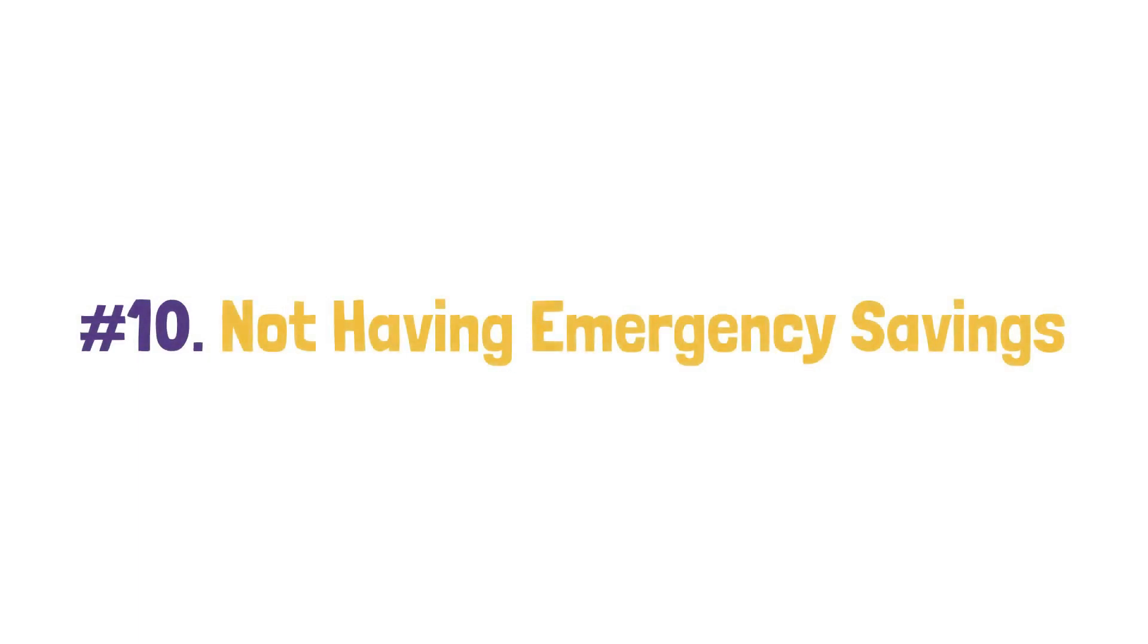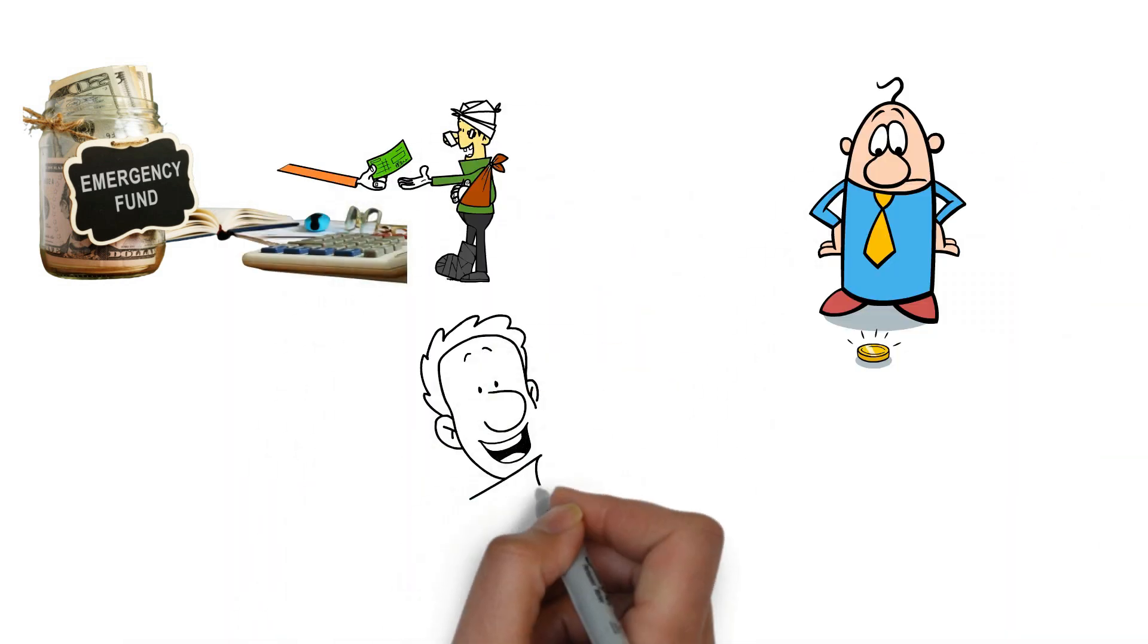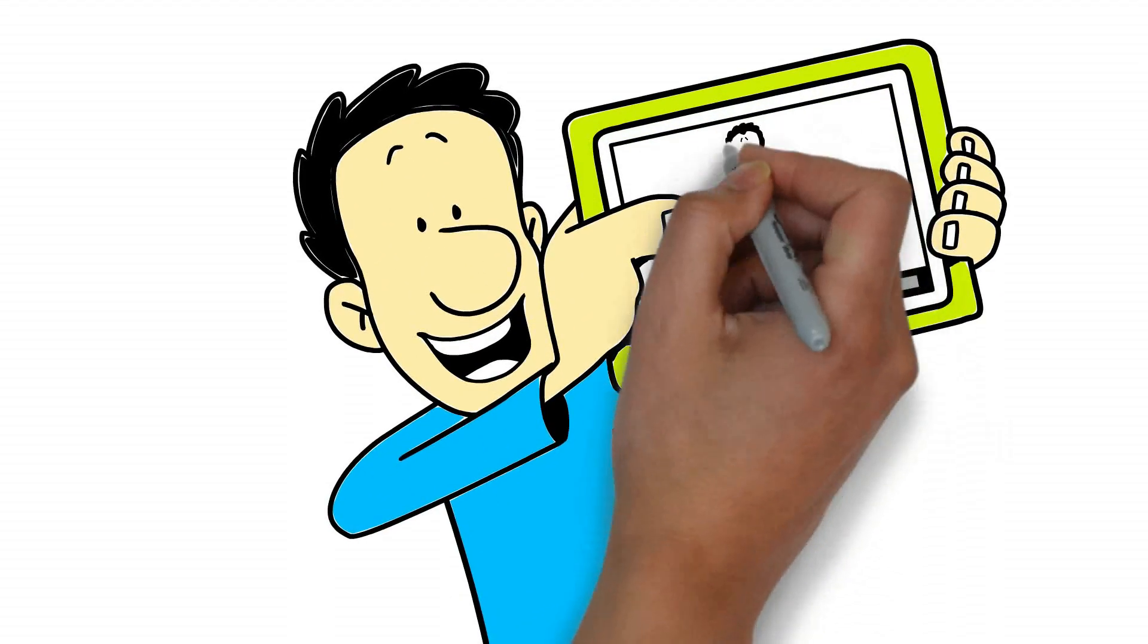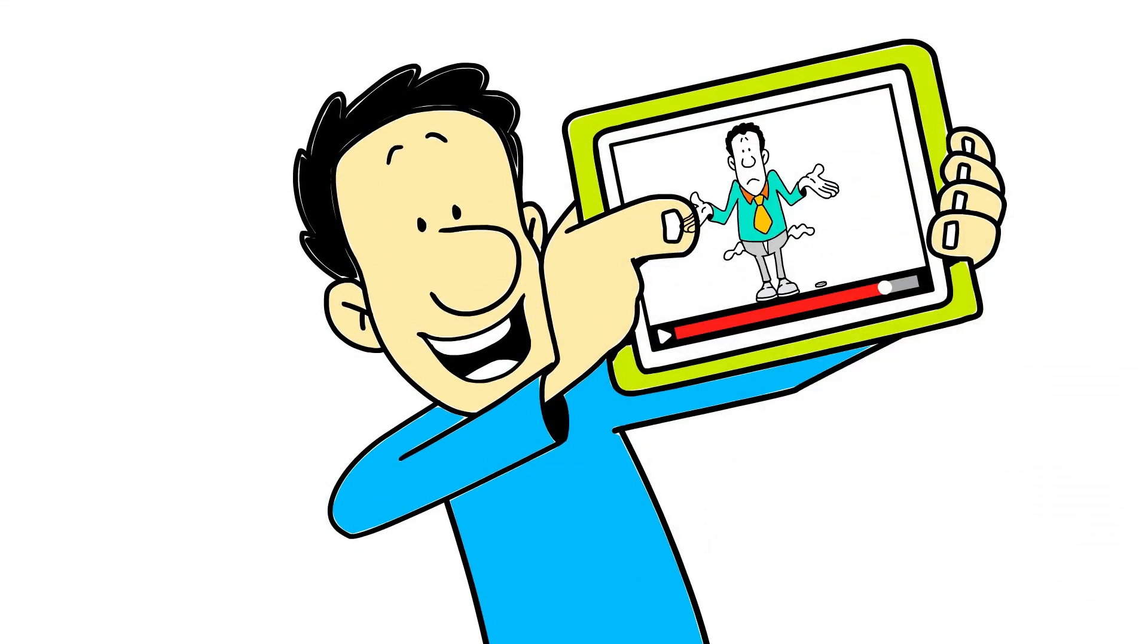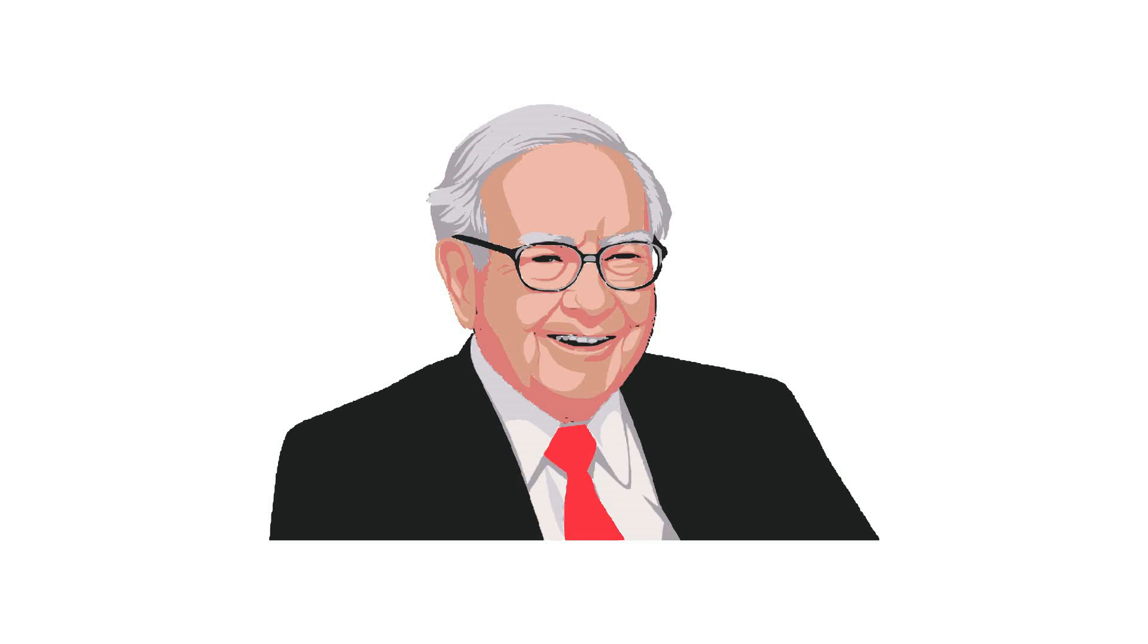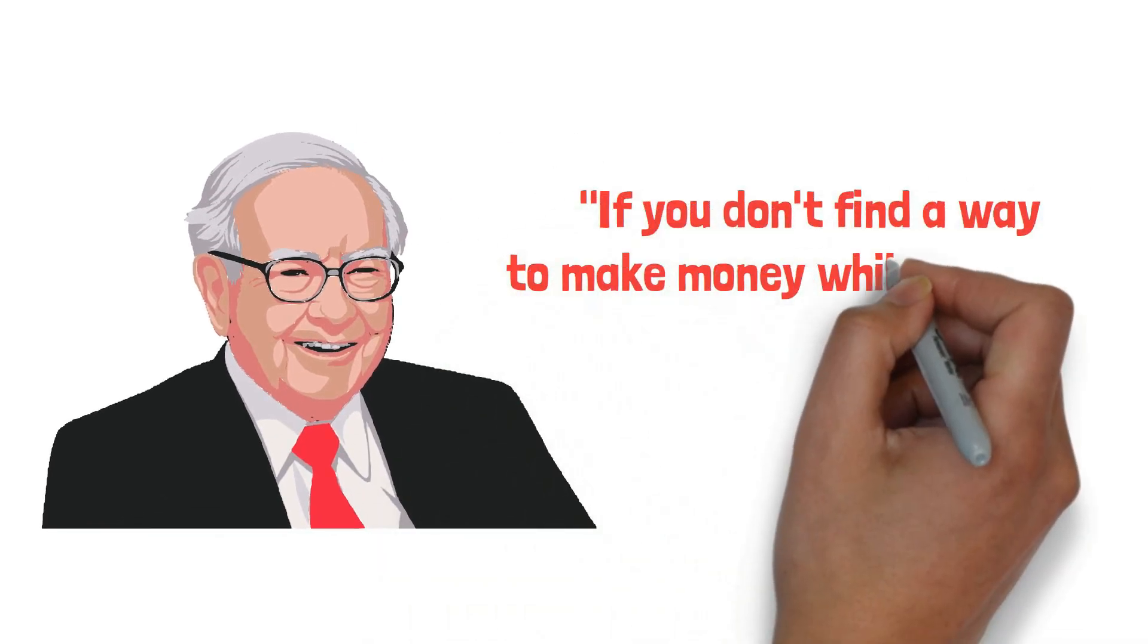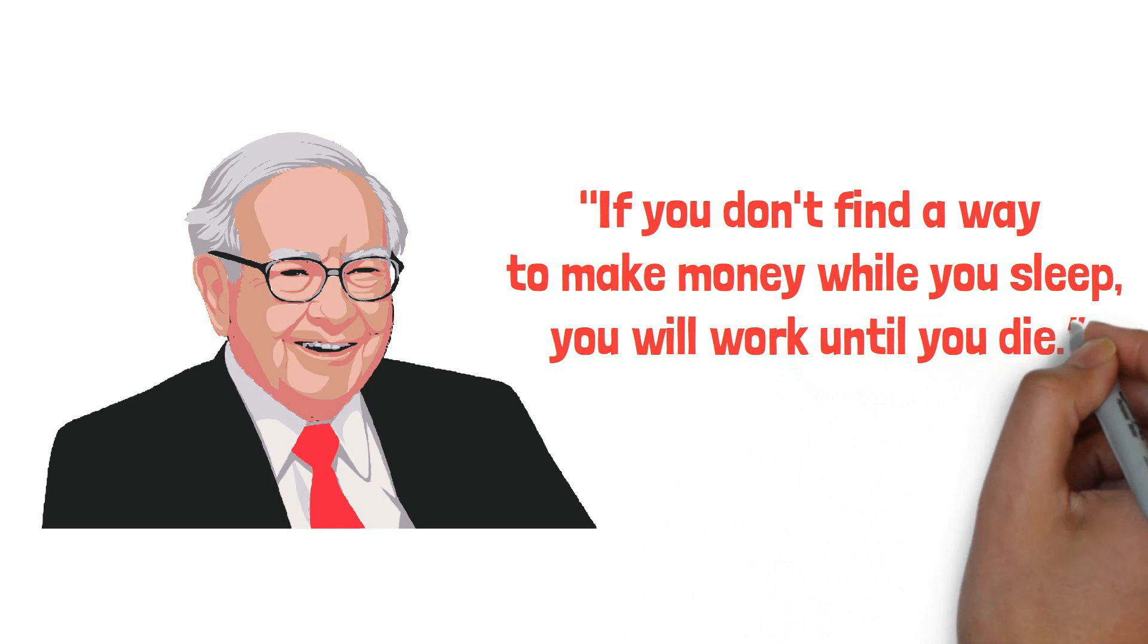Number 10: Not Having Emergency Savings. Emergency savings will deliver you when you face emergencies. Lack of emergency savings is a widely recognized factor contributing to financial struggles and poverty. Warren Buffett famously summarized this issue: If you don't find a way to make money while you sleep, you will work until you die.